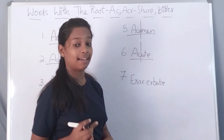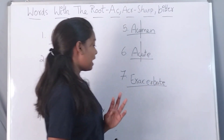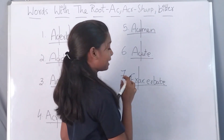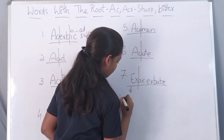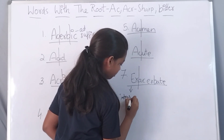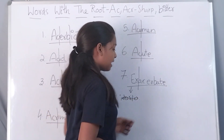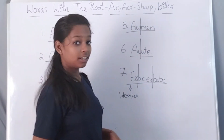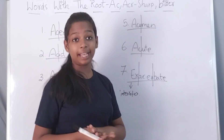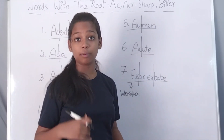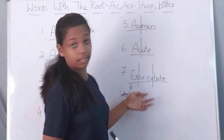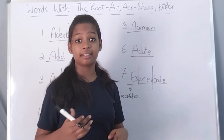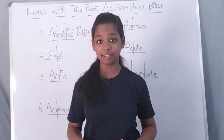The last and seventh word for today is exacerbate. Exacerbate has two root words in it: EX which is an intensifier, and ACER which means sharp or bitter. The word exacerbate means to make things worse, especially a problem or a disease.